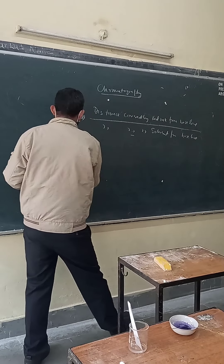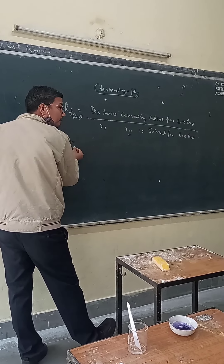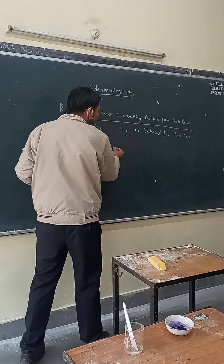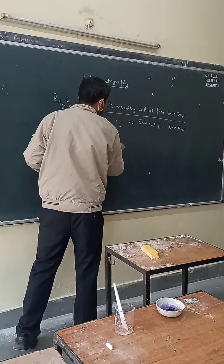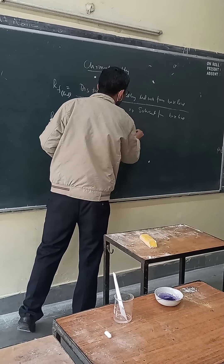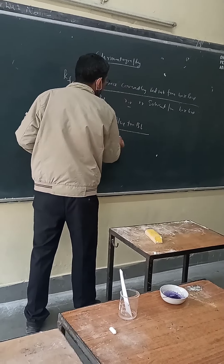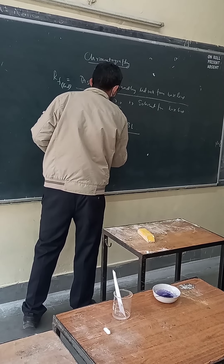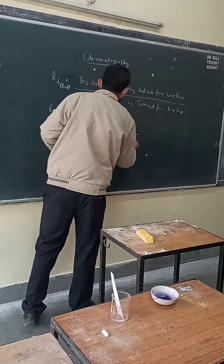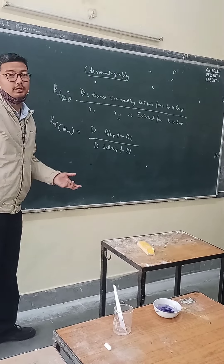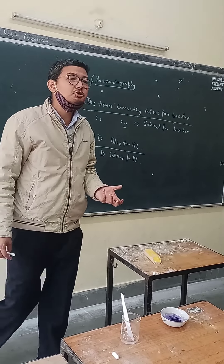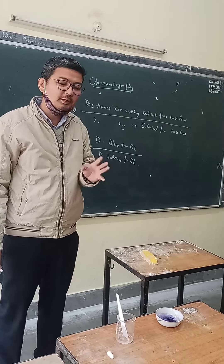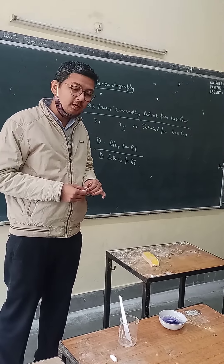Similarly, you can find the RF value for the blue ink: distance covered by blue ink from the baseline, divided by the distance covered by the solvent from the baseline. The actual application is to distinguish compounds. Here we have simply taken a mixture of two inks to demonstrate the concept.